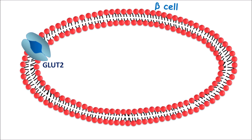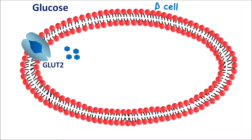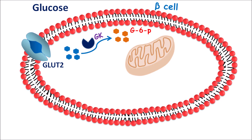On the beta cells, GLUT2 receptors are present which are transporters for glucose. When glucose levels are excessively increased, glucose can enter into the beta cells through the GLUT2 receptors. Within the beta cells, glucose is converted into glucose-6-phosphate by phosphorylation via a specific enzyme — glucokinase. This is the rate-limiting enzyme, and glucose is then converted into pyruvate by glycolysis. The products of glycolysis enter into the mitochondria where they enter the Krebs cycle, generating ATP molecules.